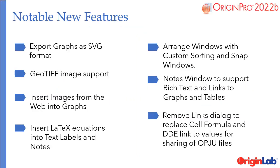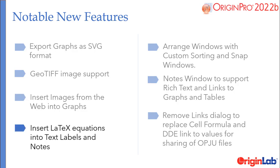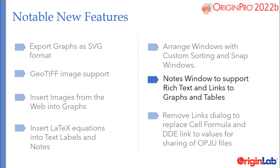The notable features of Origin 2022b are: export graphs as SVG format, GeoTIFF image support, insert images from the web into graphs, insert LaTeX equations into text labels and notes, arrange windows with custom sorting and snap windows, Notes window to support rich text and links to graphs and tables, and a Remove Links dialog to replace cell formula and DDE links to values for sharing of OPJU files.